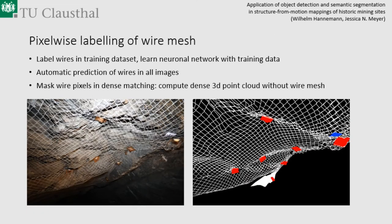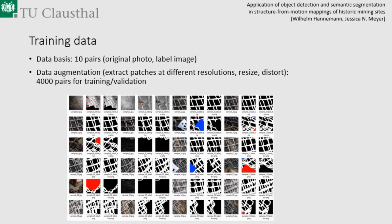We had 10 labeled images — each about 10 megapixels — labeled by hand. To get more data we performed data augmentation: we extracted many patches at the neural network's input size of 500×500 pixels from these large images at many different resolutions, and also rotated these patches.